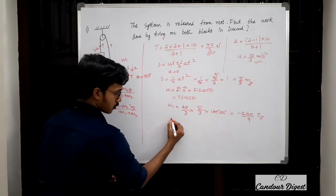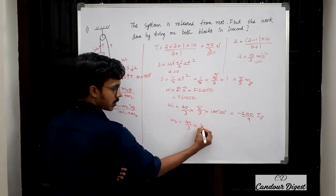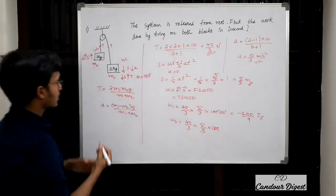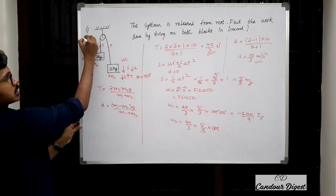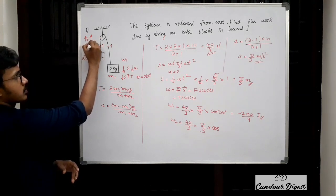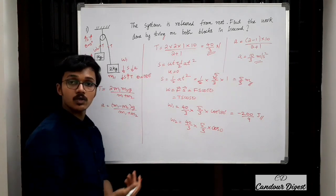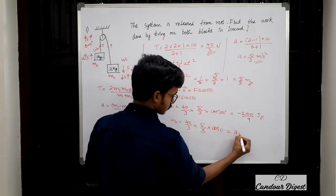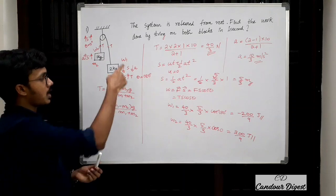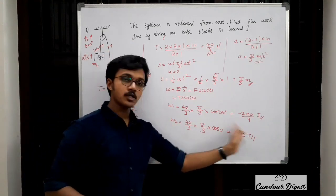Now we calculate W2. Tension is the same: 40/3 N. Displacement is also the same: 5/3 m. For block M2, the block is moving upward and tension is also acting vertically upward, so θ = 0° and cos 0° = 1. Therefore W2 = (40/3) × (5/3) × 1 = 200/9 joules. So work done on M1 is −200/9 J and on M2 is +200/9 J.